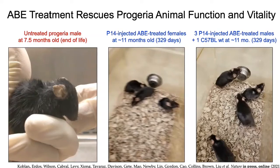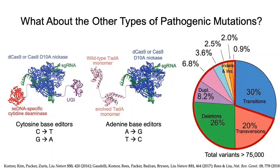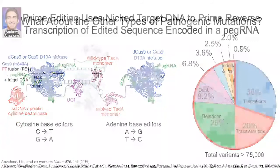Base editors can correct pathogenic transition mutations in vitro and in vivo, in some cases with dramatic rescue of disease phenotype. But what about the other pathogenic mutations beyond transition point mutations? Since these other mutations account for 70% of known pathogenic gene variants, we sought to develop other methods to directly install or correct transversions, deletions, or insertions without requiring double-stranded DNA breaks or donor DNA templates. At the end of 2019, we reported prime editing, a new mammalian cell gene editing technology to achieve these goals.